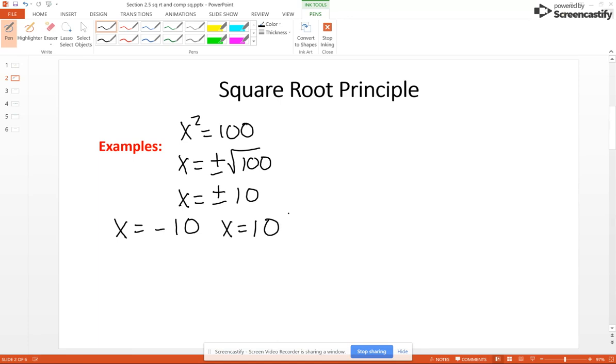Now if your square term is not isolated – so for example, we have 3x squared minus 36 equals 0 – the square root principle requires that the square term be by itself. So we're going to have to – for this problem, we're going to move our 36 over, so we're going to add it to both sides, and then we're going to divide through by the 3 and we get x squared equal 12. Now we can apply the square root principle, so we get x is plus or minus the square root of 12, which is a simplifiable radical, so we're going to have to do that.